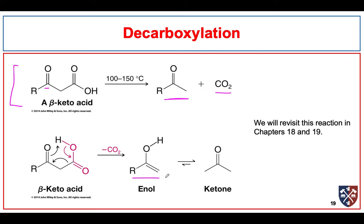We get this thing called an enol. As we will learn later, enols are not very stable and they like to rearrange to become ketones, typically with this equilibrium lying very far on the side of the ketone. We'll talk about this when we discuss the reactivity of the alpha carbon in aldehydes and ketones.